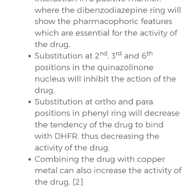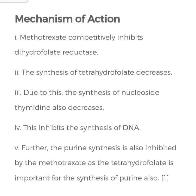Substitutions at the 2nd, 3rd, and 6th positions in the quinazolinone nucleus will inhibit the action of the drug. Substitutions at the ortho and para positions in the phenyl ring will decrease the tendency of the drug to bind with DHFR, thus decreasing the activity of the drug. Combining the drug with copper metal can also increase the activity of the drug.